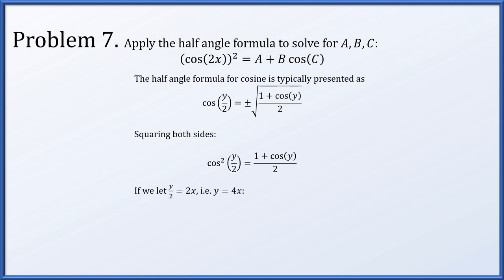So now let's let y over 2 equal 2x, because that is what our expression has — cosine squared of 2x. In the half angle formula we have cosine squared of y over 2, so setting y over 2 equal to 2x means y equals 4x. We get cosine squared of 2x equals 1 plus cosine of 4x, all over 2. If we distribute that denominator, we get 1 half plus 1 half cosine of 4x. In other words, a and b are both 1 half and c is 4x.